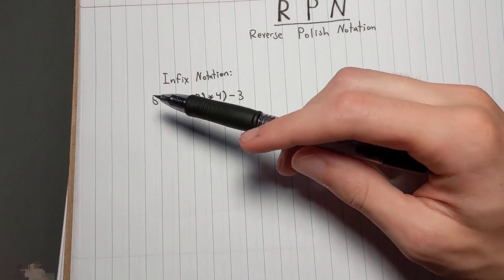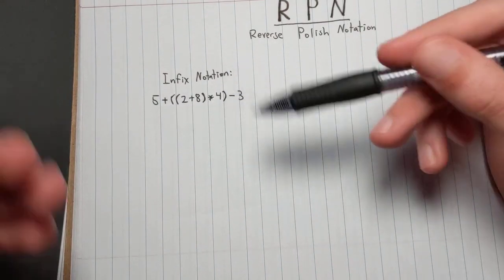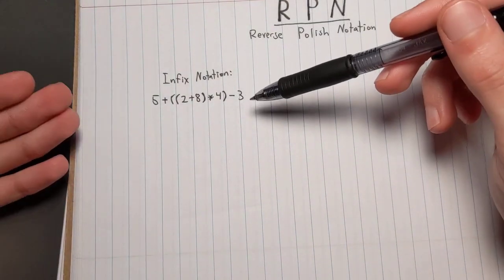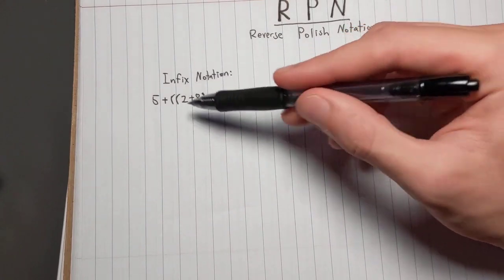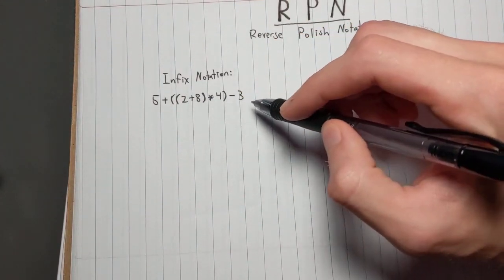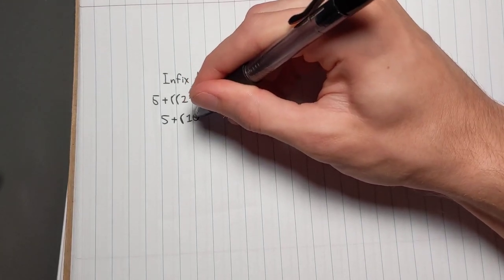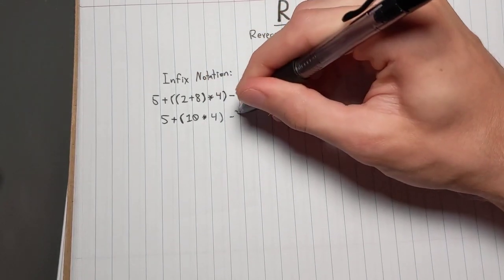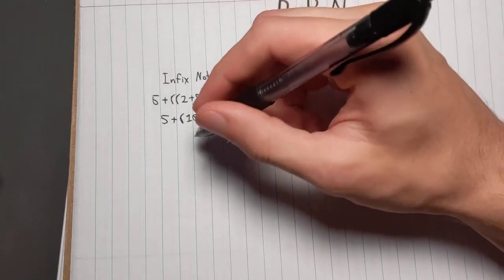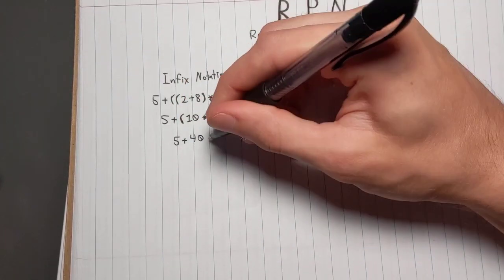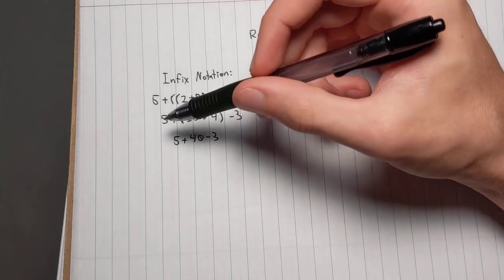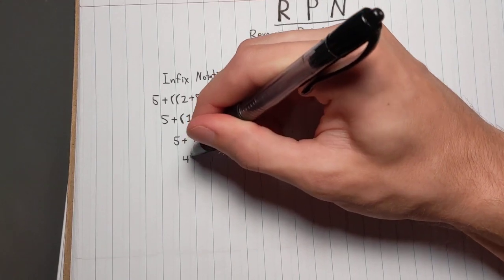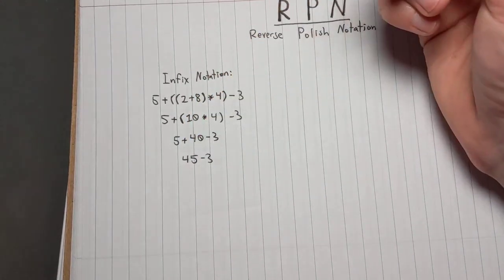This looks very familiar — everyone watching can probably solve it easily. Nothing unusual here. To solve this, we apply the innermost parentheses first, then move outward. So 2 plus 8 is 10, giving us 5 plus 10 times 4, minus 3. Then 10 times 4 is 40, so we have 5 plus 40 minus 3. Going left to right: 5 plus 40 is 45, and 45 minus 3 gives us 42.